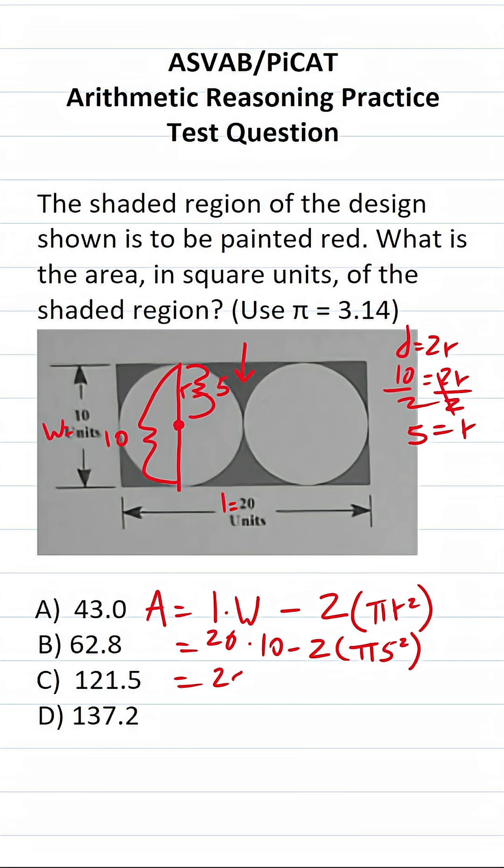All right. Let's work this out. 20 times 10 is 200 minus 5 squared is 5 times 5 or 25. 25 times 2 is 50. So this is 200 minus 50 pi.